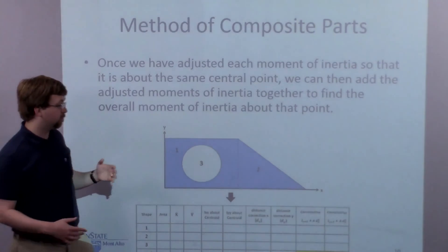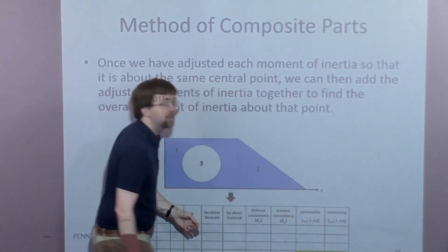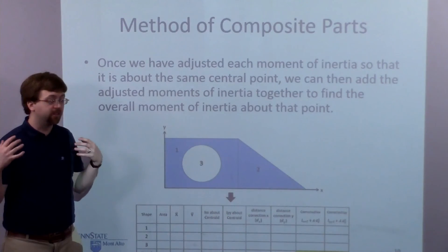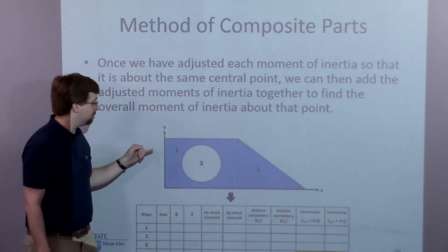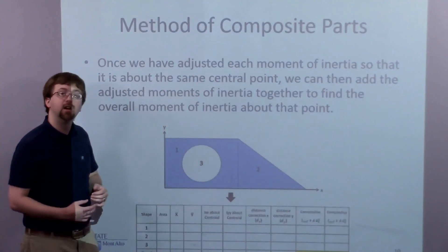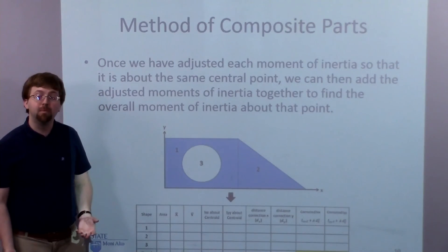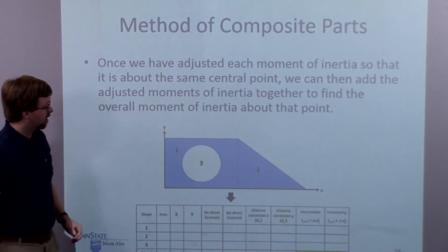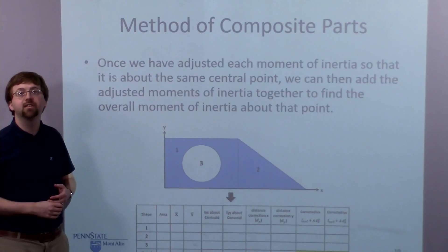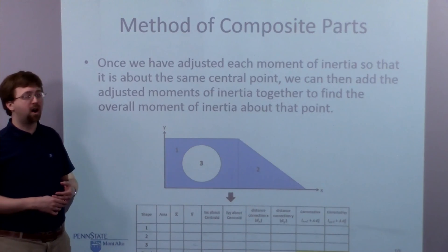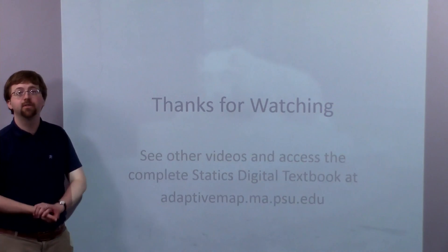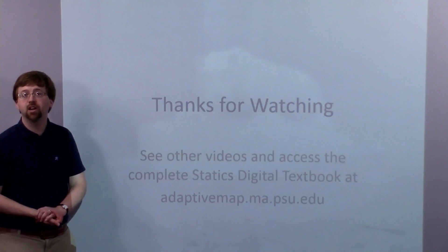Once I have these corrected values all about the same point, I can simply add them together. The sum of the corrected moments of inertia for parts 1, 2, and 3 gives the moment of inertia of the composite area. I add together all the X ones for Ix, all the Y ones for Iy, and so on. That's all for this video — thank you for watching.